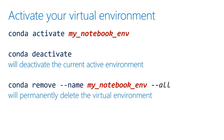Once you've created the environment, you can activate it — you simply call conda activate followed by your environment name. A couple of other useful commands: if you need to deactivate your environment to move back and forth, you have conda deactivate, and if you no longer need an environment, you can delete it using the conda remove command.